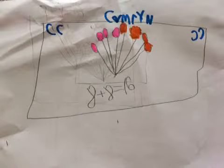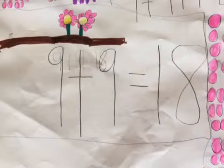Eight plus eight equals sixteen. Nine plus nine equals eighteen. I use flowers. I use the petals.